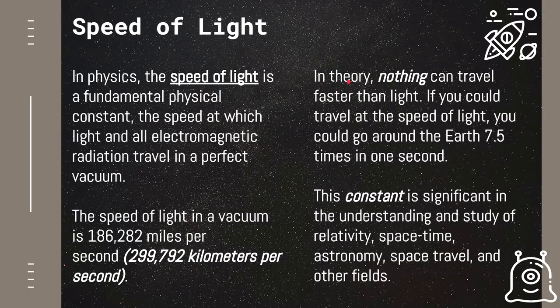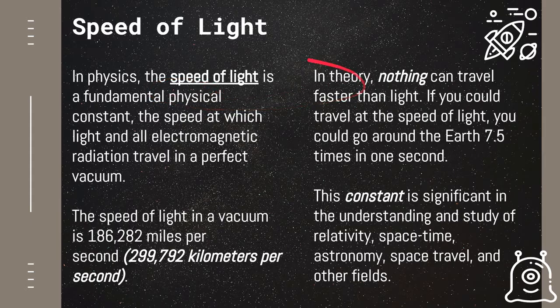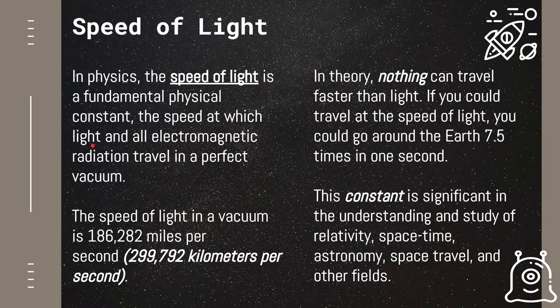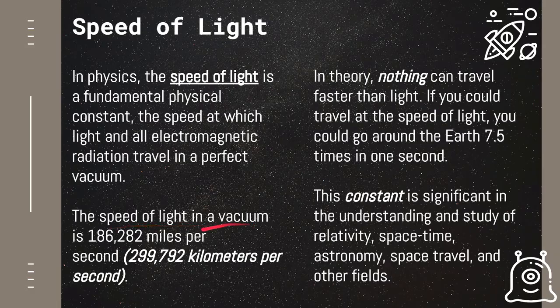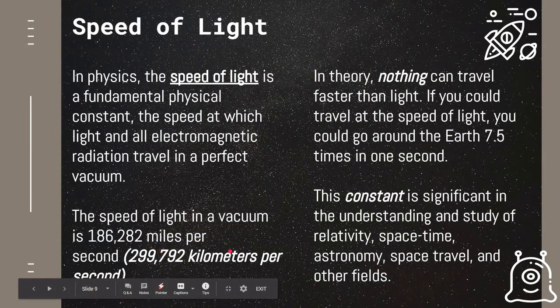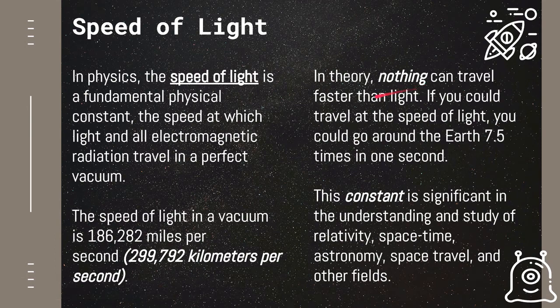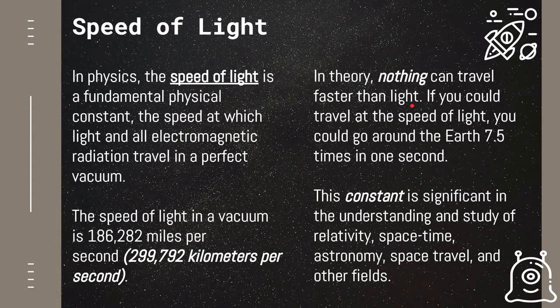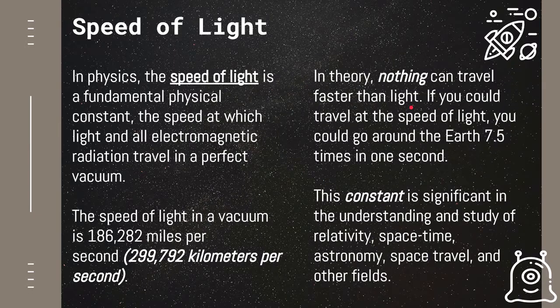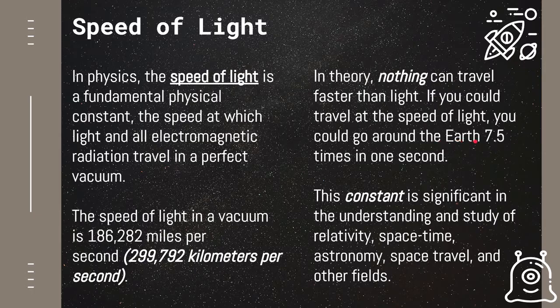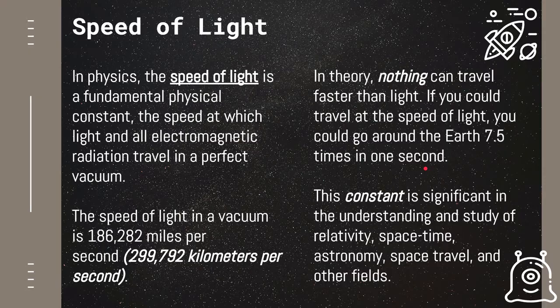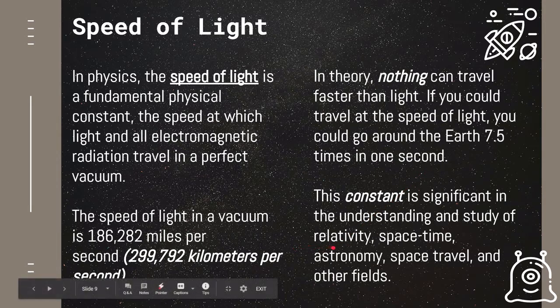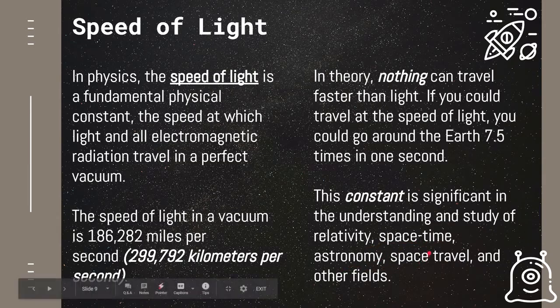You must have tackled this lesson in grade 10. In physics, the speed of light is a fundamental physical constant. This is the speed at which light and all electromagnetic radiation travel in a perfect vacuum. They estimate the speed of light in a vacuum to be around 300,000 kilometers per second. In theory, nothing can travel faster than light. Light is the fastest thing that can travel in the universe. Even if you could travel with the speed of light, you can go around the earth 7.5 times in one second. This constant is significant because it allows scientists to predict theories and understand and study relativity, space-time, astronomy, space travel, and other fields.